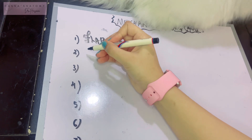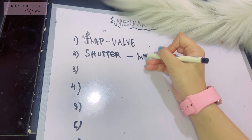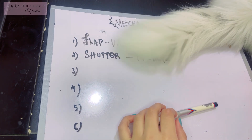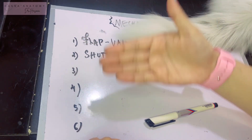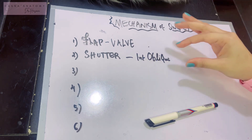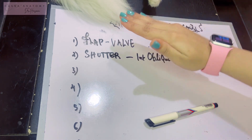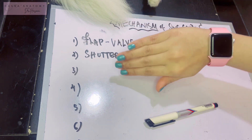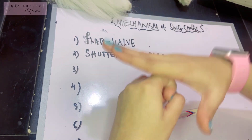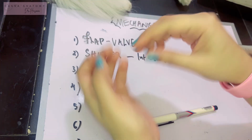The next mechanism is known as the shutter mechanism, which involves the internal oblique significantly. Recapping the boundaries: the internal oblique forms the anterior wall, the roof via its arching fibers, and via its conjoined tendon also the posterior wall — a triple relation with the canal. When intra-abdominal pressure is raised, the internal oblique contracts, the roof approximates the floor, the openings are closed, and the transversus abdominis also aids in this mechanism.